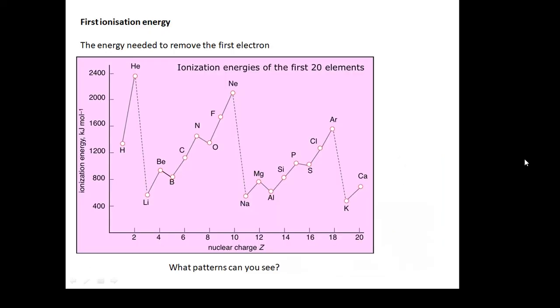Look at this. This is important. This is first ionisation energy, the energy needed to remove the first electron. You'll notice for lithium, sodium, potassium, it's small. For helium, neon, argon, it's very big. Then as we work our way across a period, it gets bigger and bigger. If we work our way down a group, then it gets smaller.